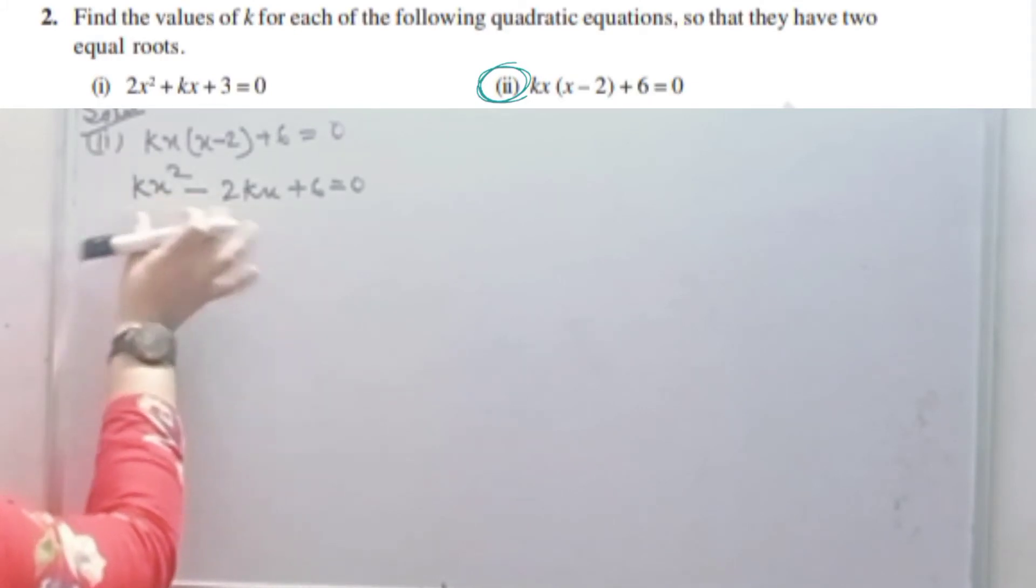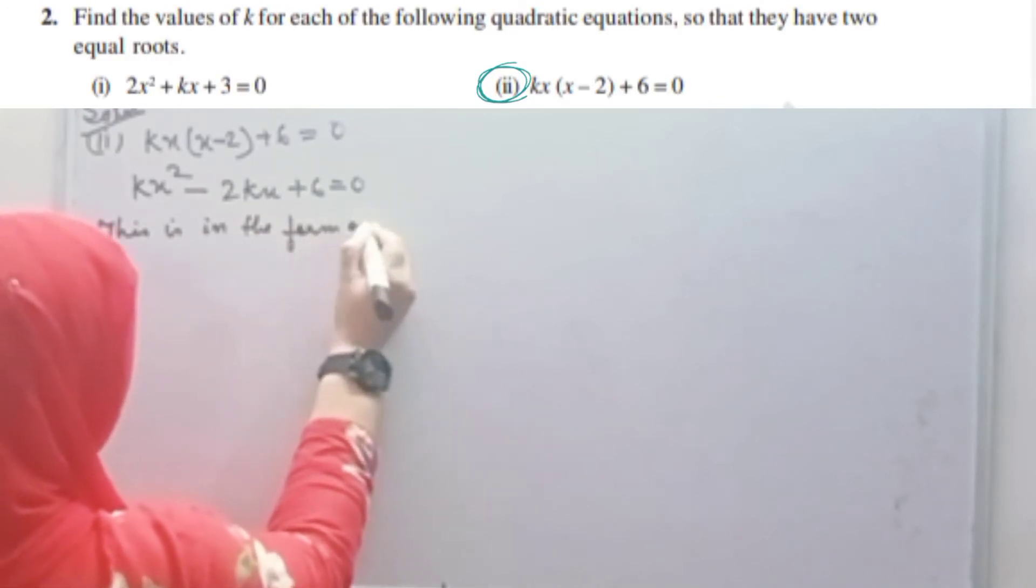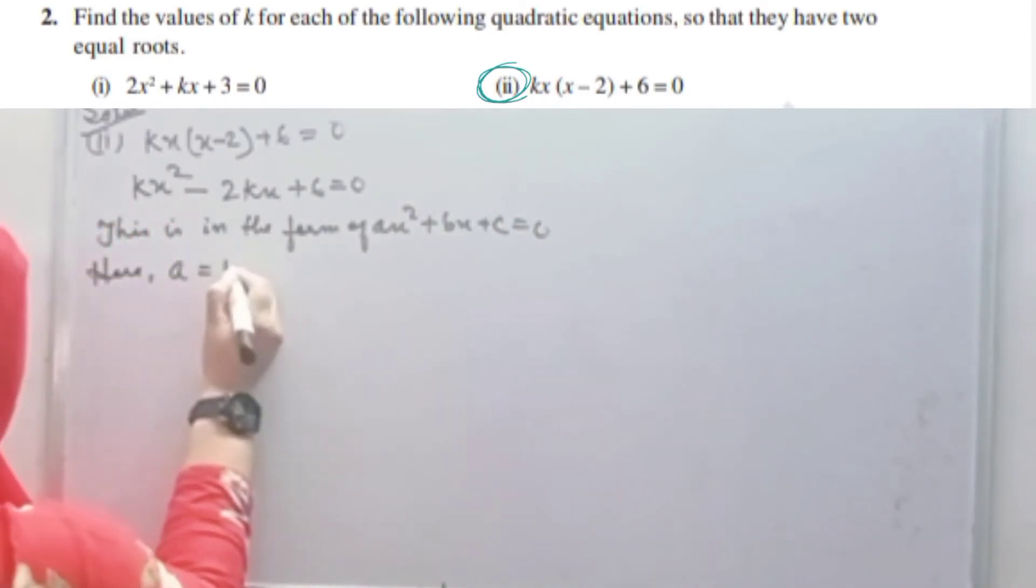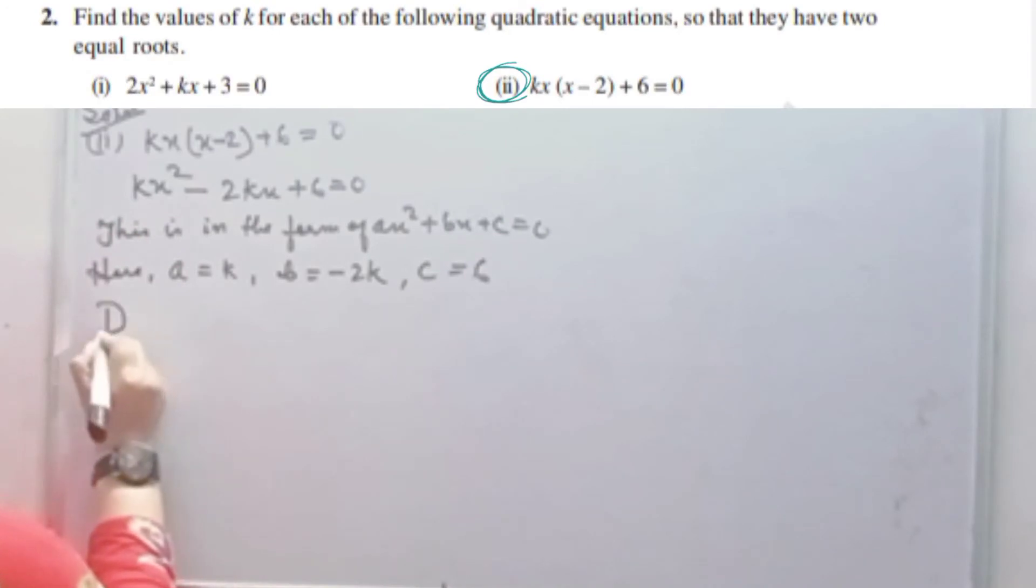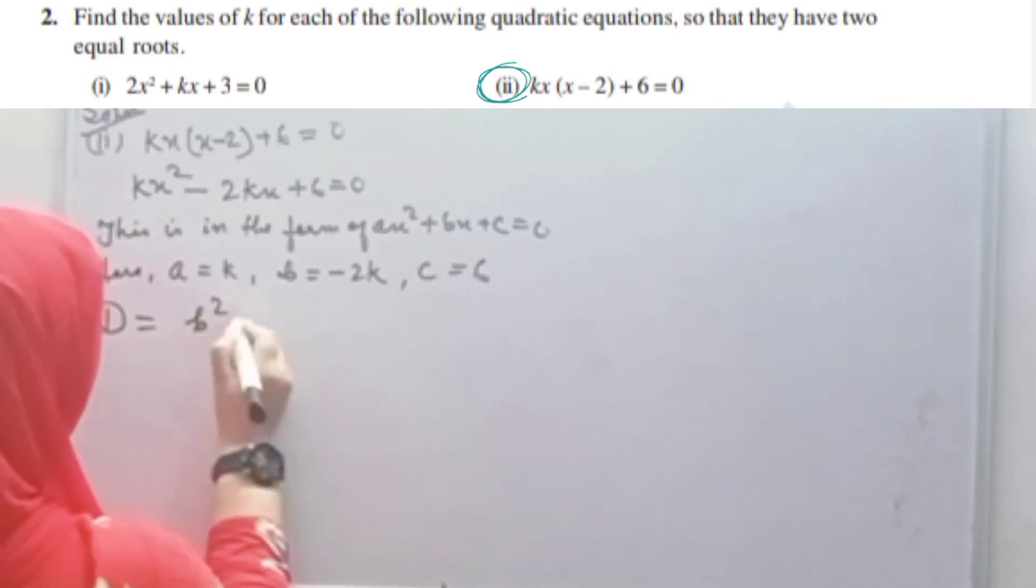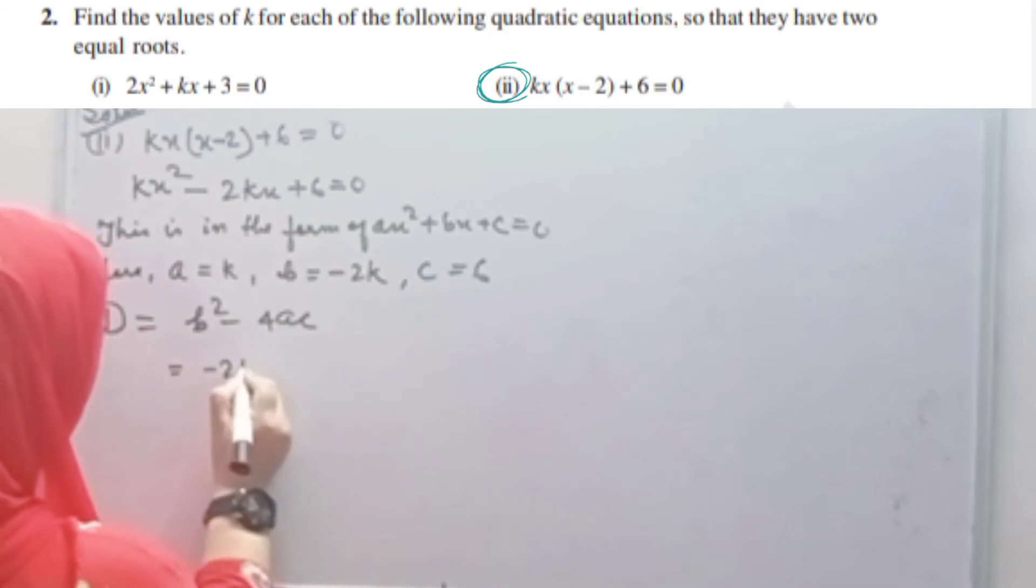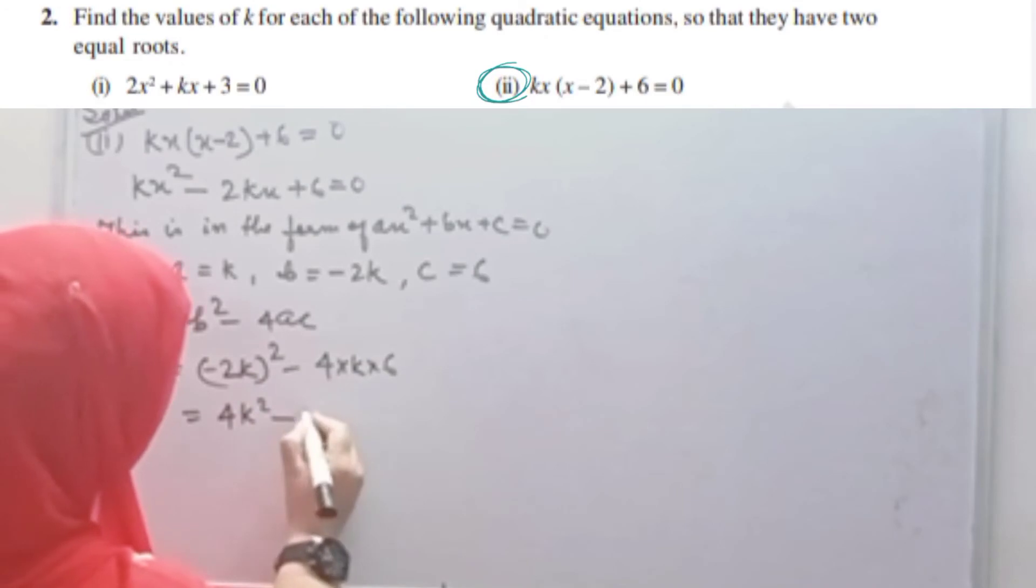So this is now in the form ax square plus bx plus c equals to 0. Here, a equals to k, b equals to minus 2k, and c equals to 6. So we find the discriminant. D equals to b square minus 4ac. What is the value of b? Minus 2k. So minus 2k squared minus 4ac. a is k, c is 6. So 2k squared is 4k squared minus 24k.